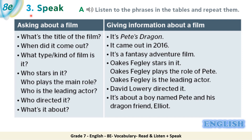Let's move to activity 3 — Speak. We have different tables full of phrases. Let's listen and repeat, starting from asking about a film and giving information about a film. Asking about a film: 'What's the title of the film?' 'When did it come out?' 'What type or kind of film is it?' 'Who stars in it?' 'Who plays the main role?' 'Who's the leading actor?' 'Who directed it?'